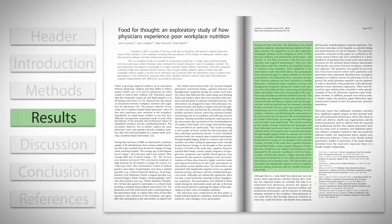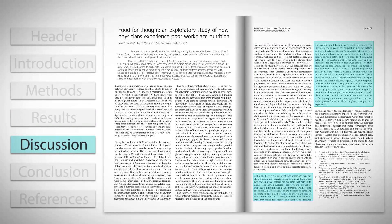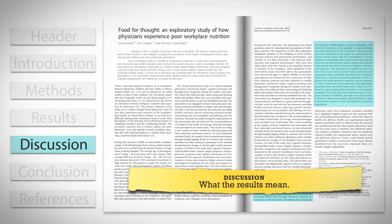Fifth is the section for discussion. Here the authors describe what the results mean, if the actual results were the predicted results, and how the results relate to the thesis, research question, or hypothesis.